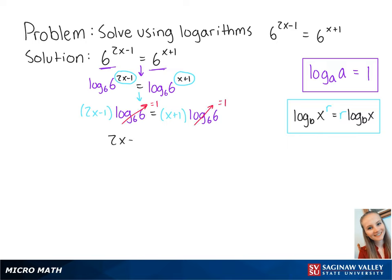we now have 2x minus 1 equals x plus 1. If we subtract x from both sides, we get x minus 1 equals 1, and then we add 1 to both sides to get x equals 2. This is the final answer.